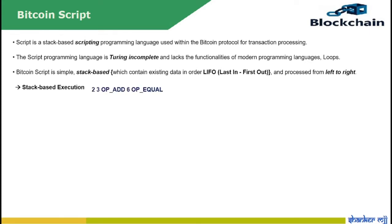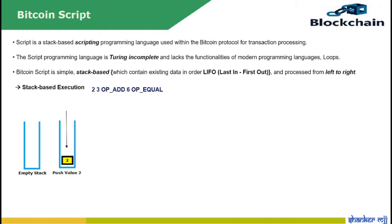For example, consider the following code written in script: 2 3 OP_ADD 6 OP_EQUAL. Script written in scripting language is executed by processing each item from left to right. In the given example, first consider a stack is empty at the beginning. Now push the number 2 onto the stack. Next, 3 will be pushed onto the stack, with the number 3 being the topmost item. Next we have an opcode called OP_ADD.